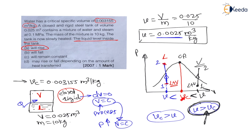But here, the condition is that the specific volume is less than the critical specific volume. Therefore, for this condition, the liquid level will rise — option A is the correct choice. Thank you dear students. In the next lecture, we will see one more numerical on this topic.